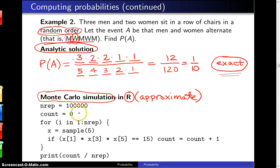The variable COUNT is initialized to zero, and that variable is going to store the number of times out of those 100,000 trials that men and women alternate.